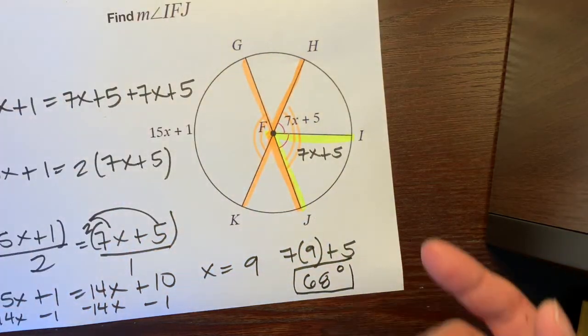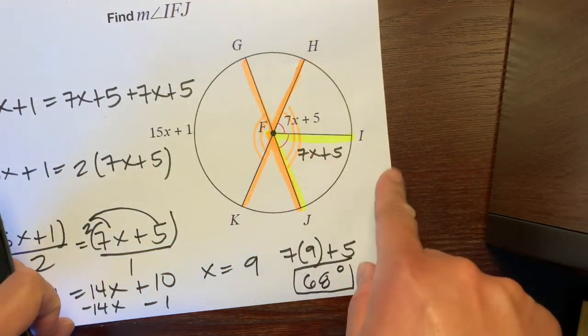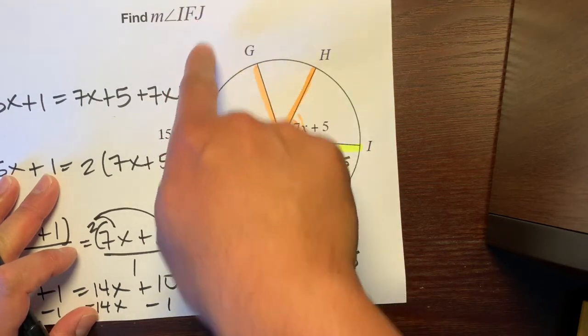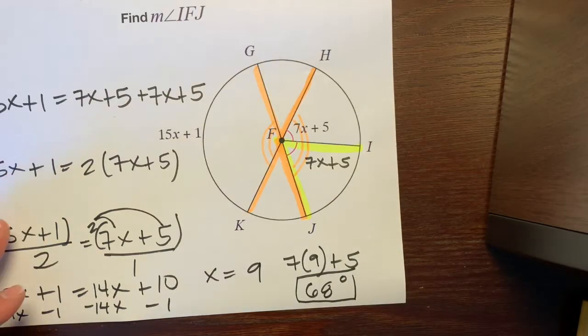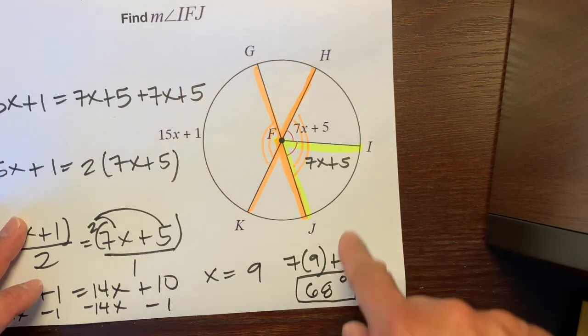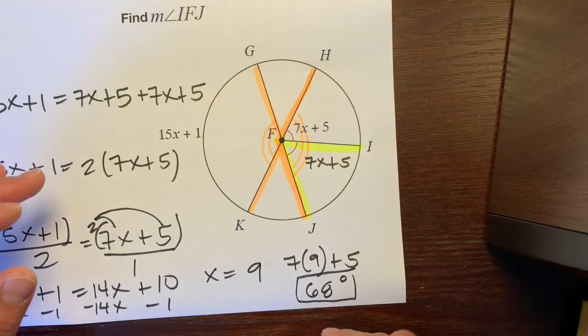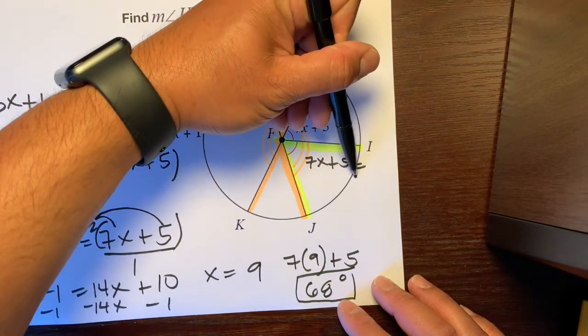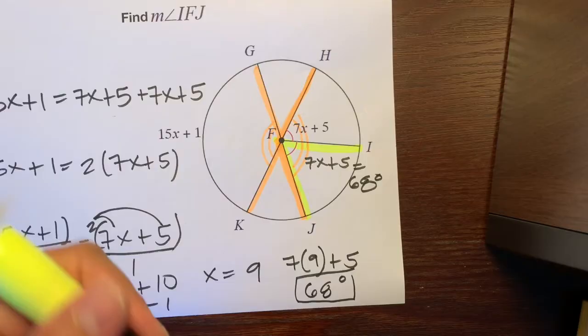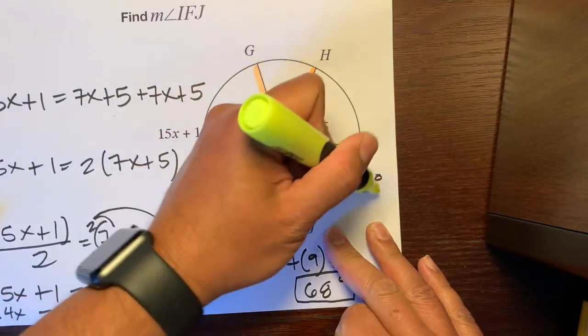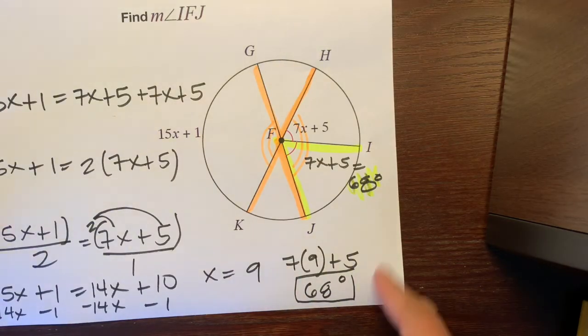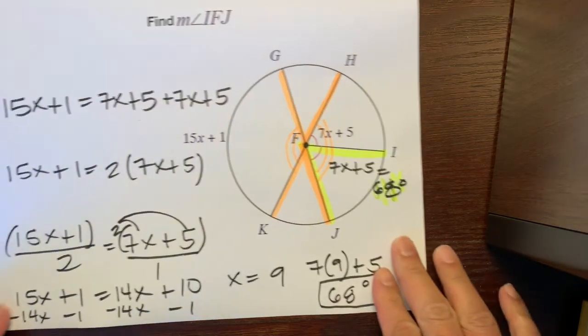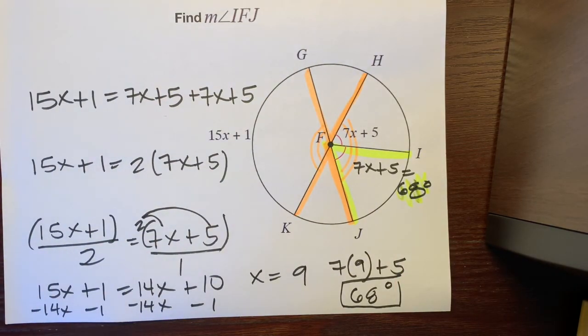Then, we box it because we've answered what the question was asking for. Not even a question because there's no question mark. It's commanding us, hey, find IFJ. We followed through and we found the measure of IFJ, which is 68 degrees and be proud of it. You could highlight it. There you go. But, don't highlight it like that because it makes it look really dirty when you just use the pen and then the highlighter. Anyways, there's your final answer. Hope this helps. Mr. Q. And, yeah, have a great day.